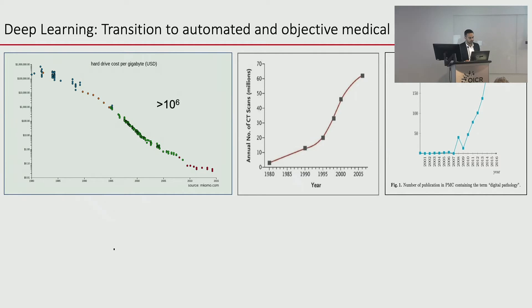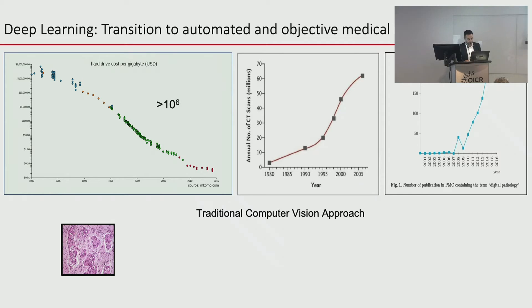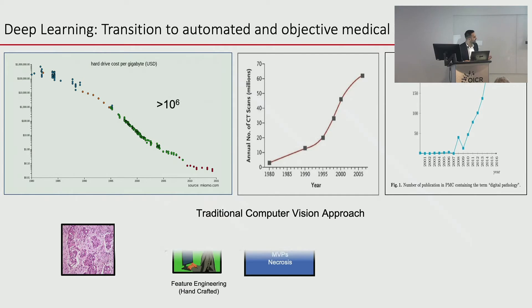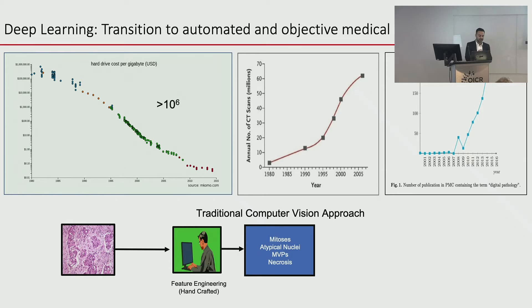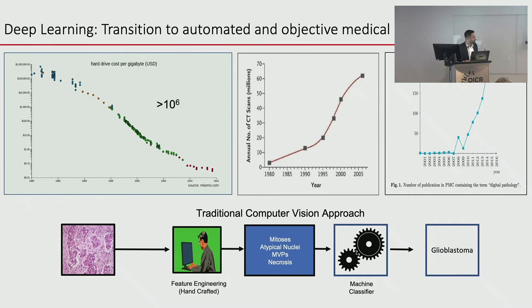There's been almost vertical growth in digital pathology recently because of innovations in this field, and the amount of data we're generating is just too much for a human to handle. That's why we need artificial intelligence and digital pathology — for automated handling of vast amounts of information. There are traditional approaches and deep learning approaches. The traditional approach requires handcrafting features: a computer scientist works with a pathologist to engineer features into algorithms that can detect and quantify specific things.